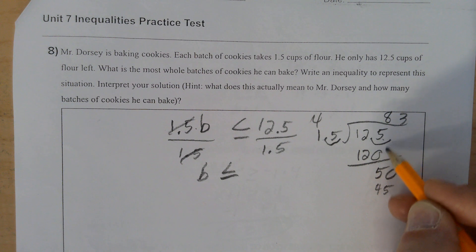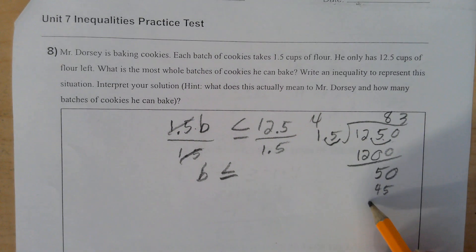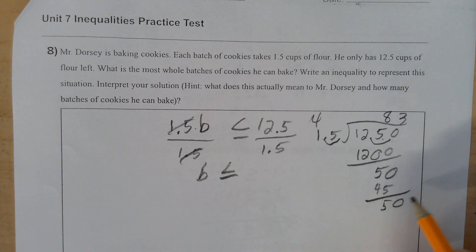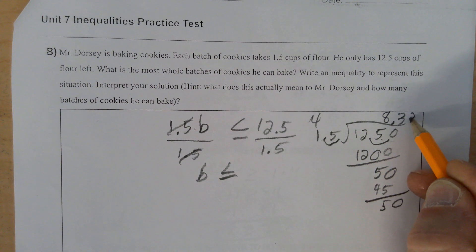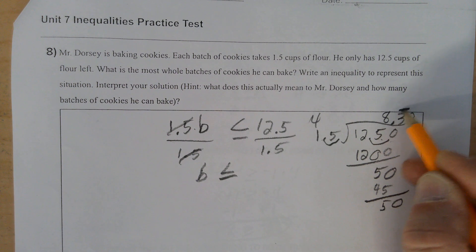Let me just bring down another 0. Let me just keep going. And then this becomes a repeating decimal. So this is 8.33. So it's 8.3 repeating.